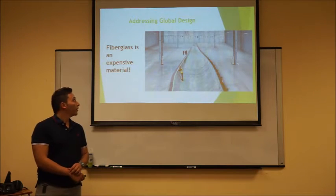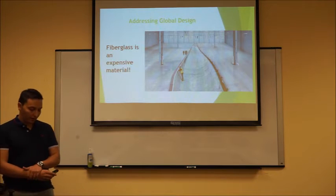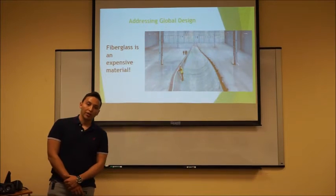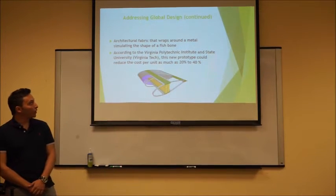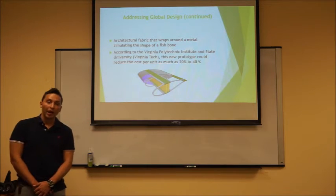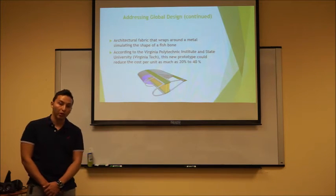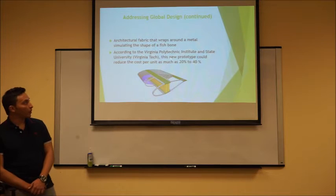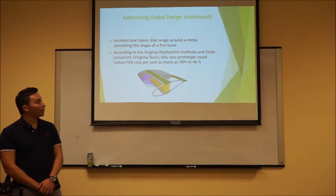Addressing global designs: current prototypes use fiberglass, and this material is very expensive — not only costly but it adds a lot of weight to the structure and requires very specific materials and tools. The solution to this problem is the use of architectural fabric that wraps around metal in the shape of a foil form. This new prototype would include parts of the world that cannot afford fiberglass. According to the Virginia Polytechnic Institute, this new design will reduce the price per unit by as much as 20 to 40 percent.